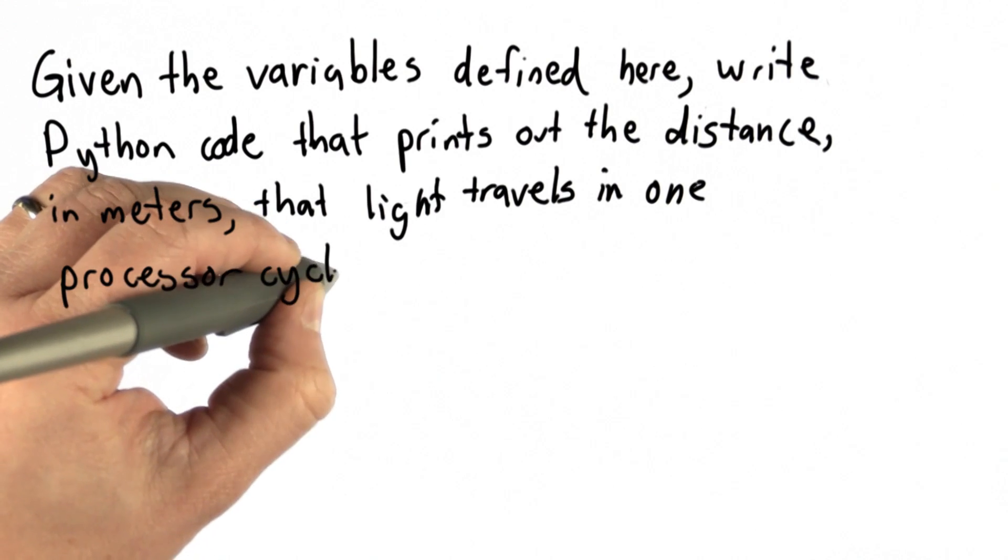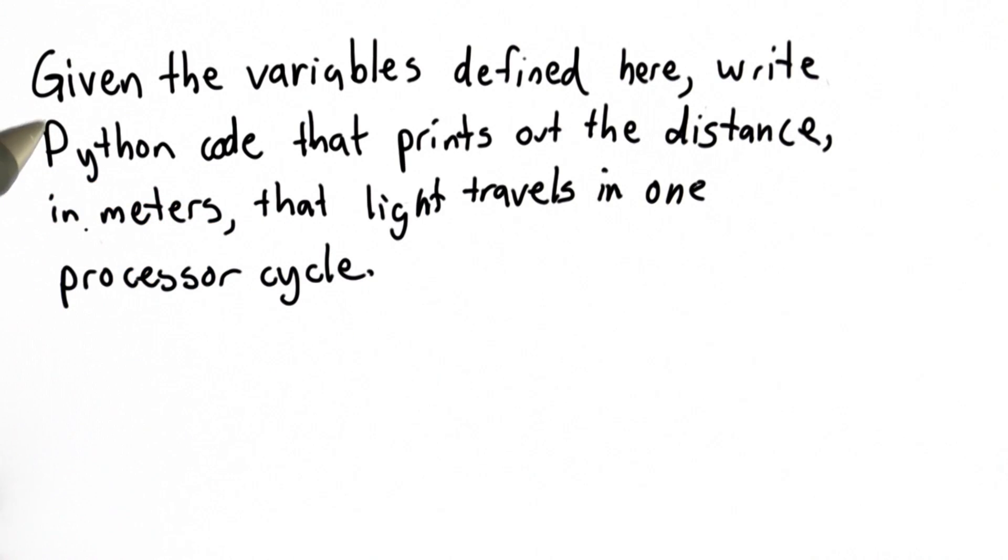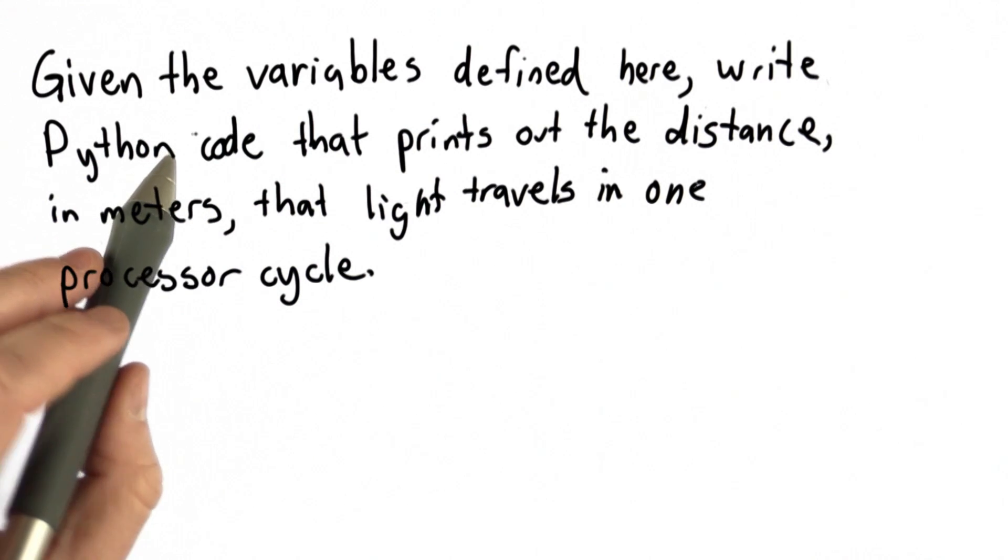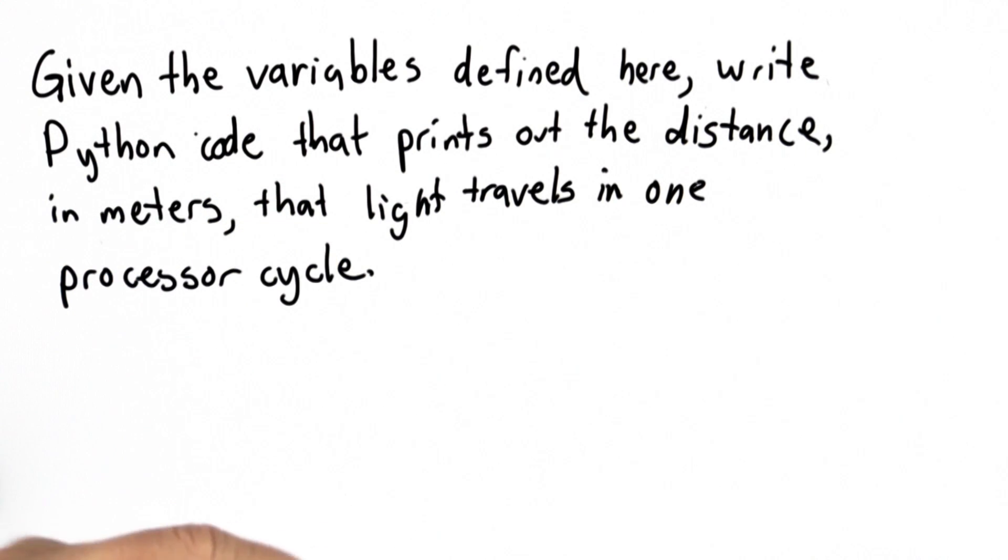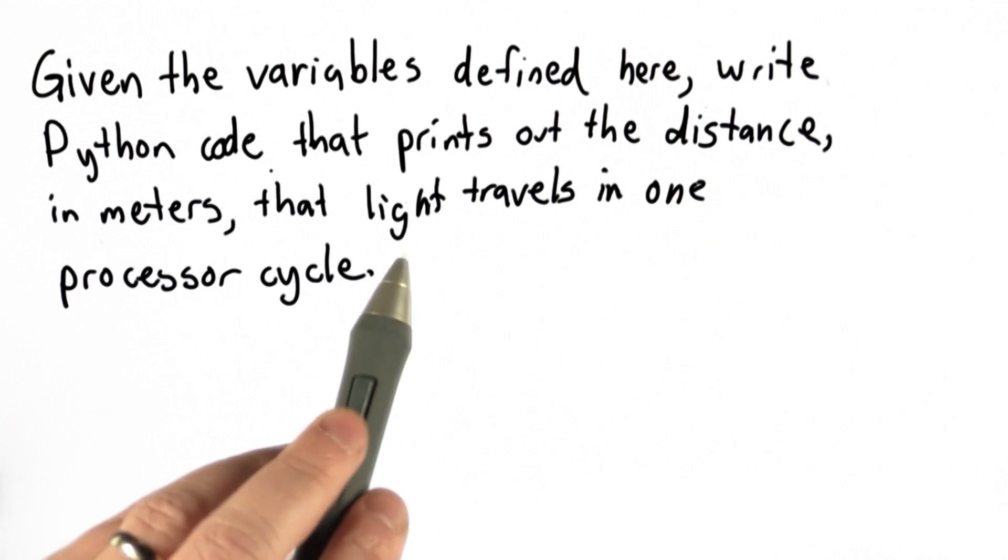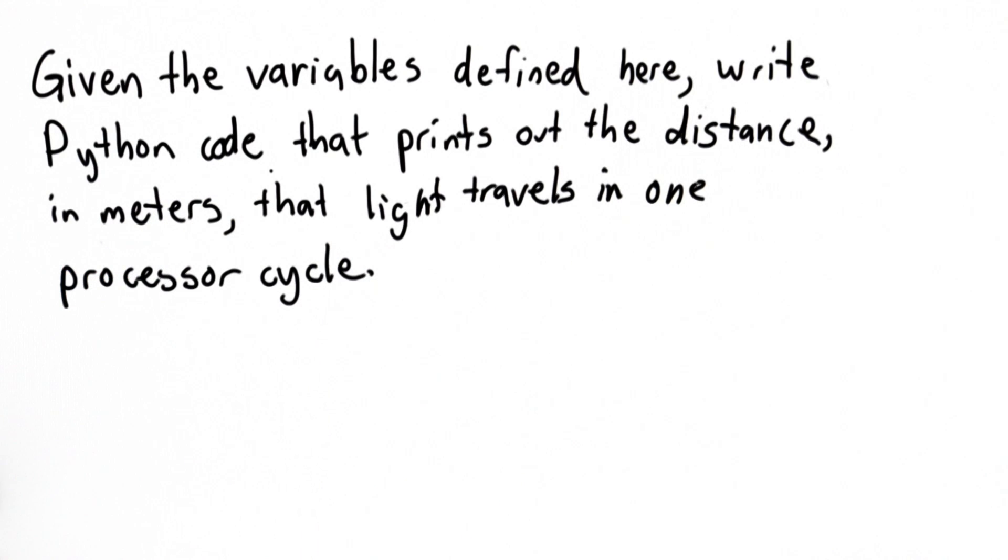For this quiz, given the variables defined here (you'll see them already in the code in your web browser), your goal is to write Python code that prints out the distance in meters that light travels in one processor cycle.